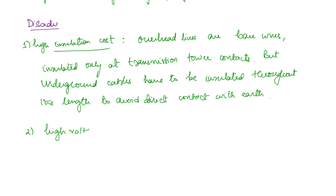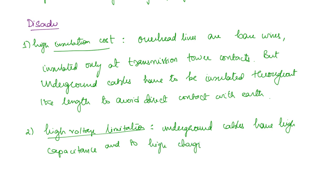The next disadvantage is there is a limitation to the voltage level. Why is that? It is because of the capacitance. Underground cables are associated with more capacitance, and when there is more capacitance there will be more charging current. Charging current increases with voltage, so we have a limitation on the voltage level that can be transmitted. Underground cables have high capacitance and high charging current, which limits the use of cables for high voltage levels.